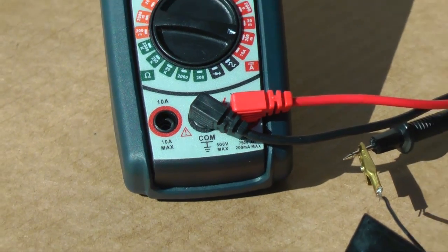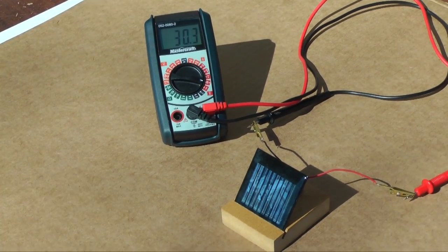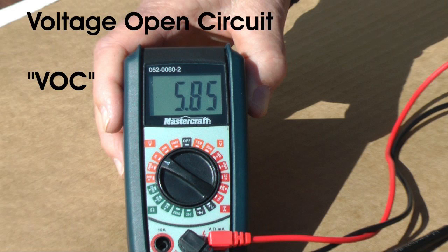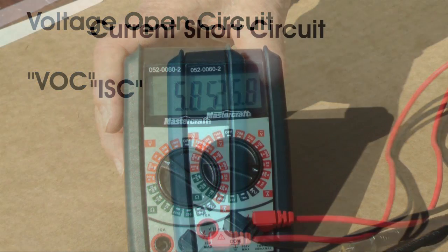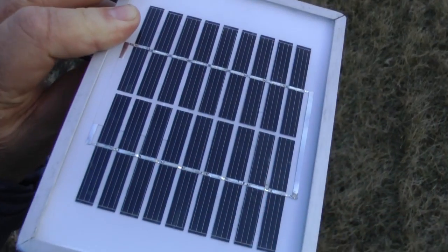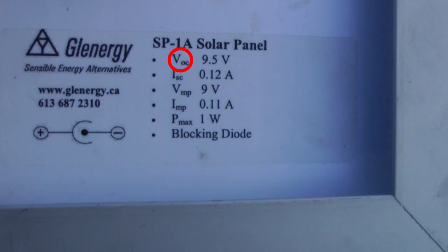This type of voltage and current reading have a special designation in the photovoltaic industry. The voltage reading we took is designated VOC or voltage open circuit. No load is connected to the panel. The current reading is designated ISC or current short circuit. This is the maximum amperage the panel produces under standard light conditions. If you look at the back of a professionally made panel, you will see a ratings document with values for VOC and ISC under standard light conditions.